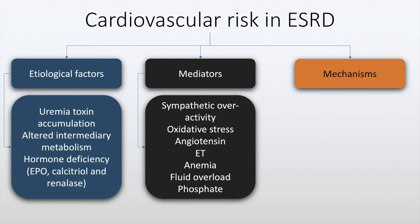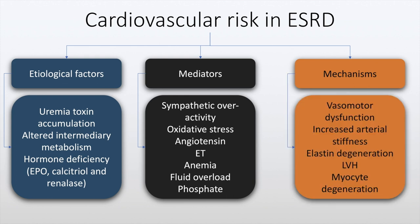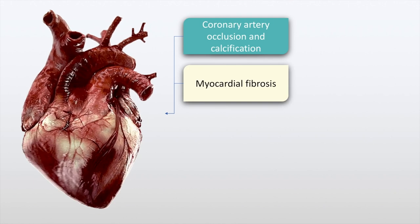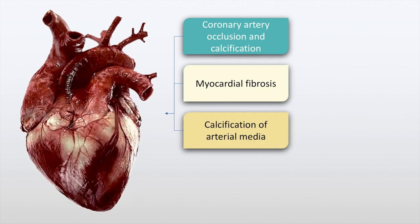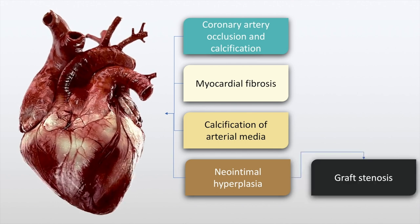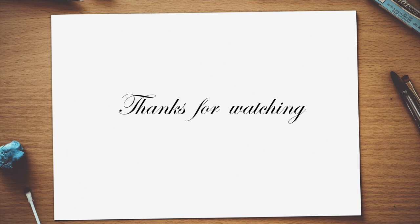The mechanisms with which increased cardiovascular mortality occurs in patients with end-stage renal disease include vasomotor dysfunction, increased arterial stiffness, elastin degeneration, left ventricular hypertrophy, and myocyte degeneration. Finally, there is increased coronary artery occlusion and calcification, myocardial fibrosis, calcification of the arterial media, and neo-intimal hyperplasia which results in increased graft stenosis. That's it for our presentation on renal replacement therapy. Thanks for watching and we will see you in the next video.